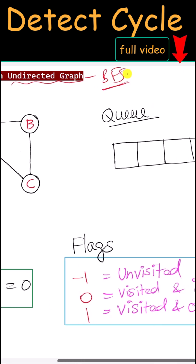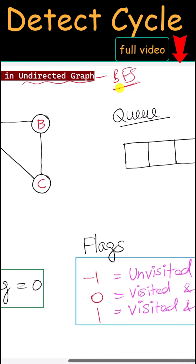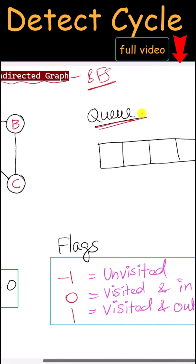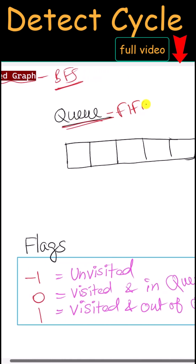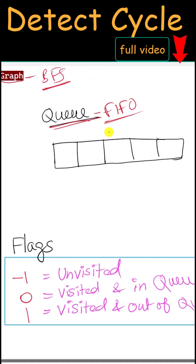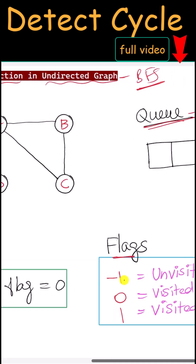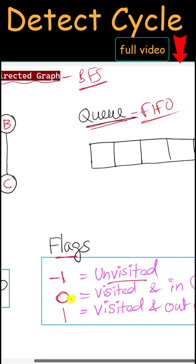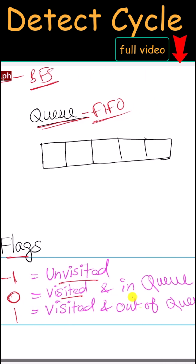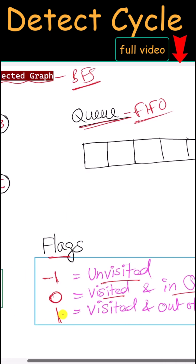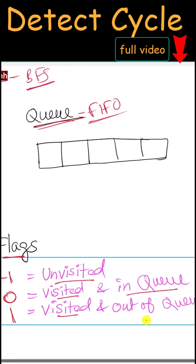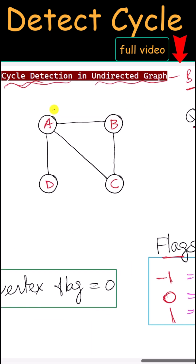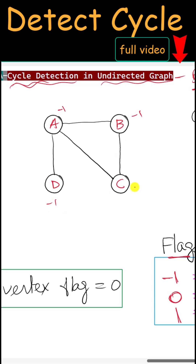We are going to use BFS to find the cycle. In the case of BFS, we have to use a queue, which is a first-in first-out data structure. Here are the flags we will use: negative one means a vertex is unvisited, zero means it is visited and in the queue, and one means it is visited and out of the queue. Initially, all vertices are unvisited, so their flag is set to negative one.